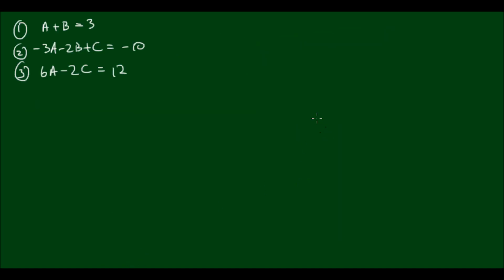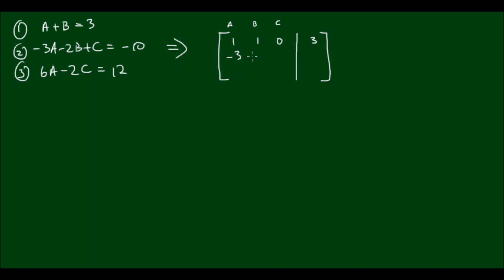I have a system of three equations which I'll solve using an augmented matrix. The first row corresponds to A plus B plus 0C equals 3, so the row is 1, 1, 0 | 3. The first column corresponds to A, second to B, third to C. The second row is negative 3, negative 2, 1 | negative 10. The third row is 6, 0, negative 2 | 12.